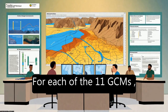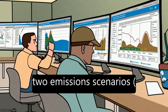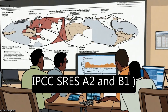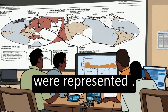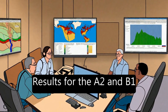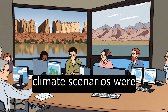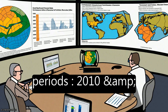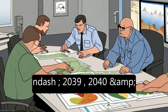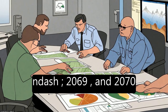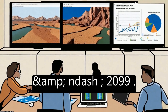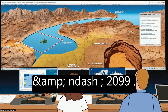For each of the 11 GCMs, two emissions scenarios — IPCC SRES A2 and B1 — were represented. Results for the A2 and B1 climate scenarios were divided into three periods: 2010–2039, 2040–2069, and 2070–2099.